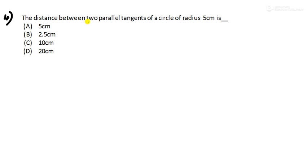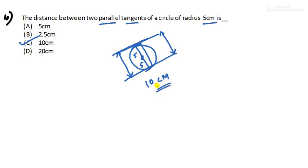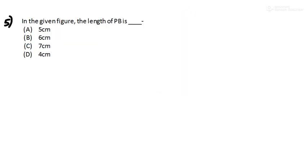Question 4: the distance between two parallel tangents of a circle of radius 5 centimeters. Two tangents can be parallel — if they are parallel, the distance between them is the same on both sides. The radius on each side is 5, so the total distance from one tangent to the other is 5 plus 5, which equals 10 centimeters.